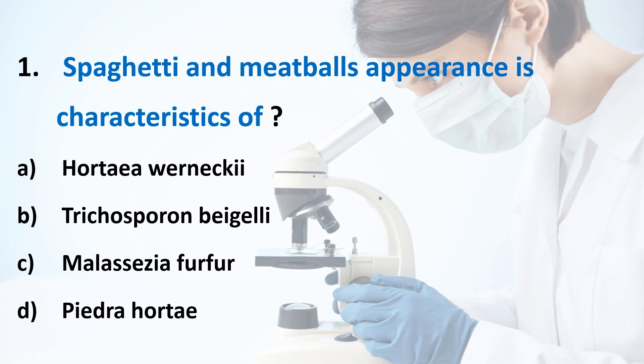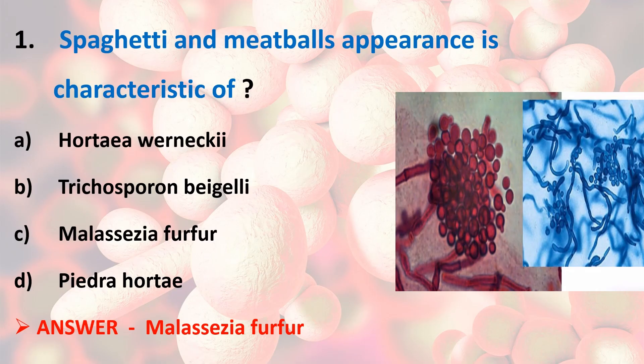First question: 'Spaghetti and meatballs' appearance is characteristic of which organism? Options: Hortaea werneckii, Trichosporon beigelii, Malassezia furfur, Piedra hortae. Answer is Malassezia furfur. Under microscopy, skin scraping is seen as a mixture of budding yeast cells and short septate hyphae, called the spaghetti and meatball appearance.